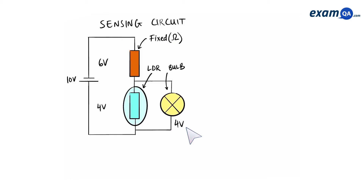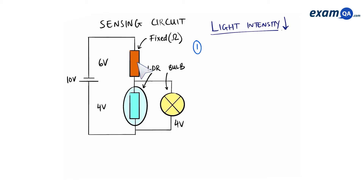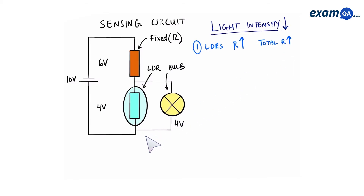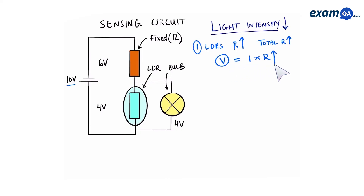So now we're ready to talk about how this works. When the light intensity drops, the first component to respond is the LDR, because it's a light-dependent resistor. So the LDR's resistance will increase. If the LDR's resistance increases, that means the total resistance of the whole circuit will also increase. The total voltage is fixed at 10 volts, so using V = IR, since voltage is fixed and resistance has increased, the current has to decrease. Therefore, the total current in the whole circuit has decreased.